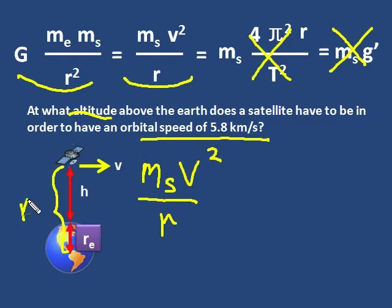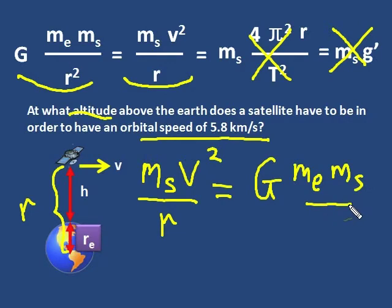And I have m v squared over r. Now r is the total distance between centers. It will be re plus h. But we'll put r in when we solve. And we have the gravitational equation, g, me, ms over r squared. Once again, notice that the mass of the satellites cancel. And on one side, the r squared, one of those r's will cancel this r right here.